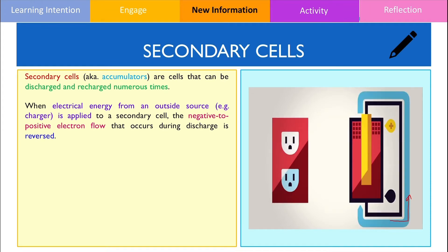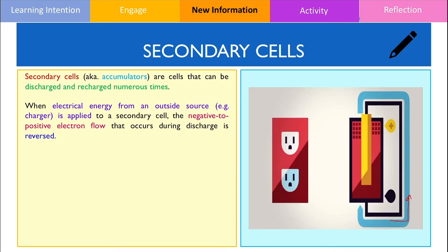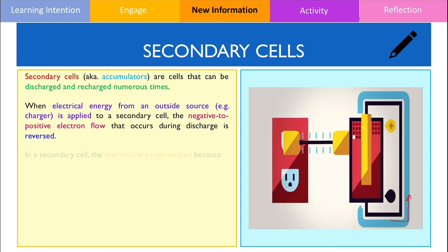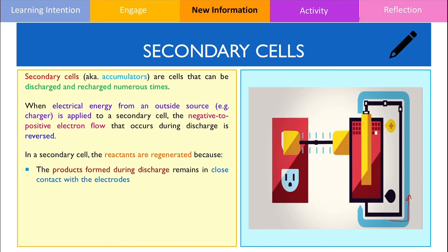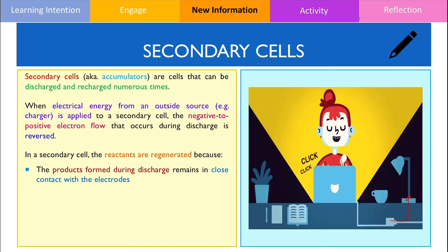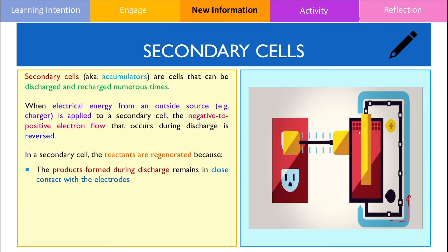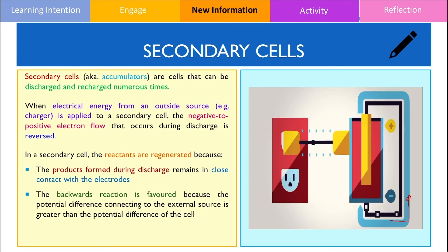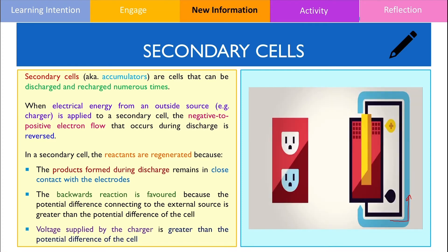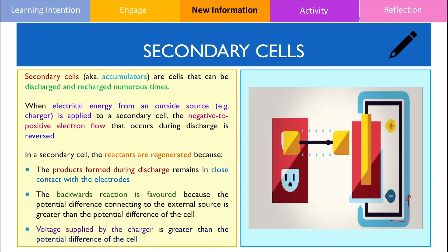As shown in the diagram, the direction of electron flow is reversed when recharging the battery, which means instead of moving from the negative to positive terminal, electrons are now moving from the positive to negative terminal. The secondary cell has the capacity to regenerate reactants because the products formed during discharge remain in close contact with the electrodes. This is important because redox reactions occur on the surface of the electrodes. Furthermore, the backwards reaction is favoured when a charger is connected because the potential difference of the charger is greater than the potential difference of the cell. The voltage supplied by the charger needs to be greater than the potential difference of the cell, otherwise the cell will not recharge.